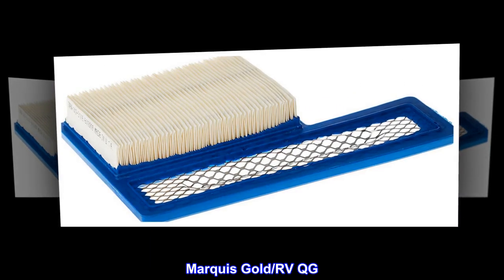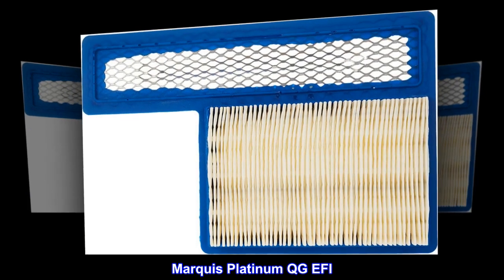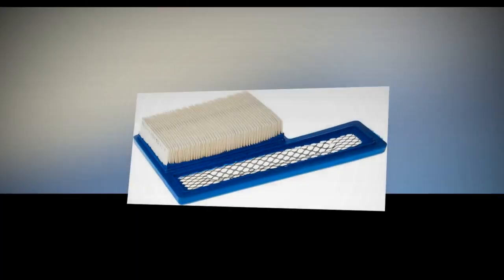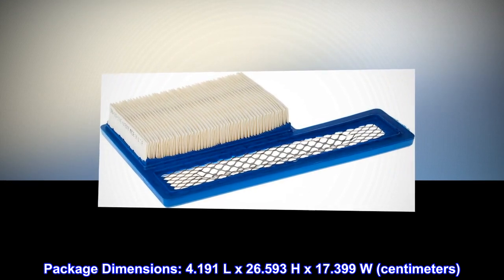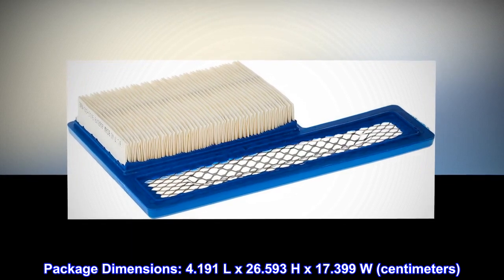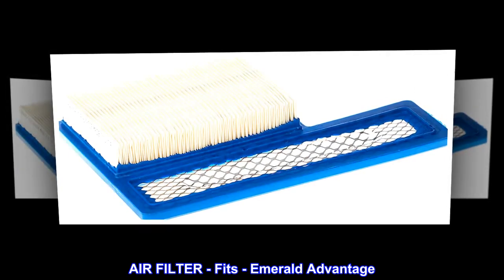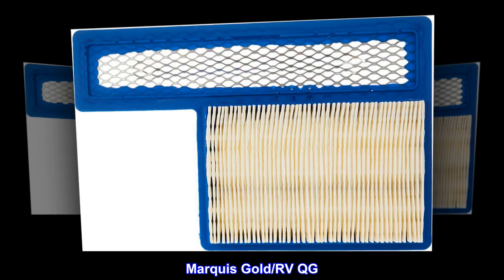Marquee Gold RVQG, Marquee Platinum QGFE. Fit type: universal fit. Package dimensions: 4.191 L by 26.593 H by 17.399 W centimeters. Air filter fits Emerald Advantage, Marquee Gold RVQG, Marquee Platinum QGFE.